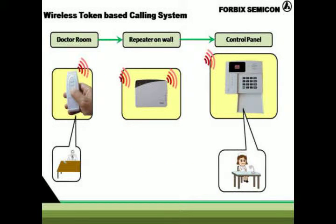The signal from the remote controller travels via the intermediate repeater system to the console panel in front of the receptionist.